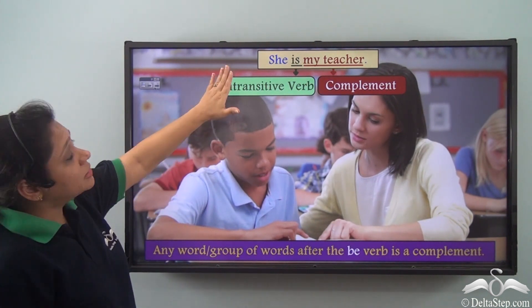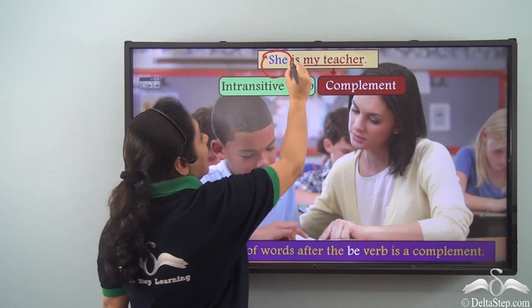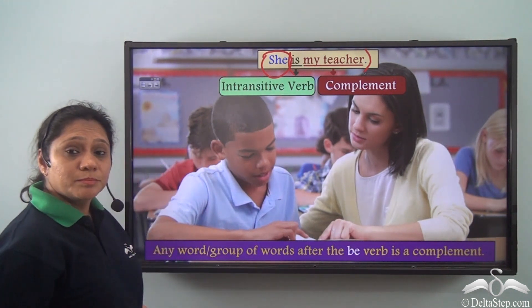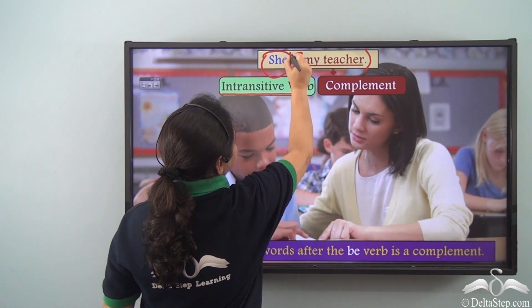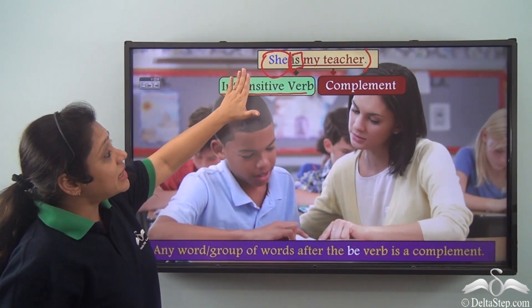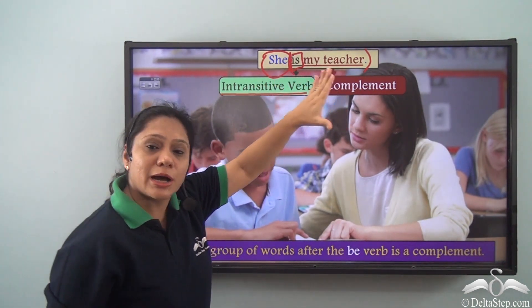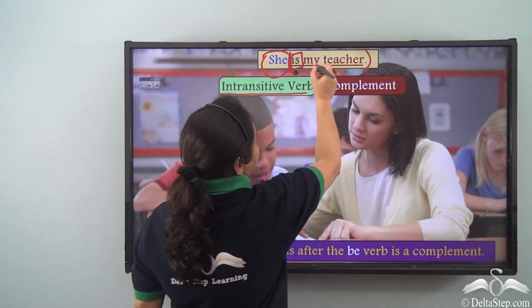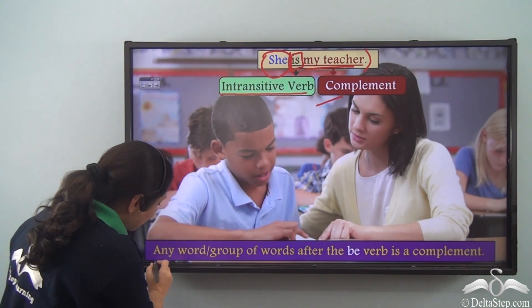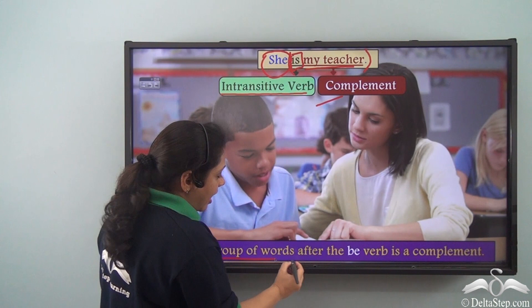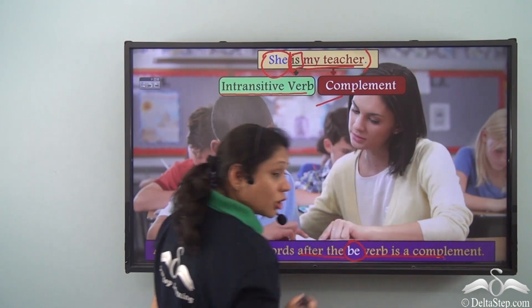If I say 'she is my teacher,' in this sentence 'she' is the subject and 'is my teacher' is the predicate. This predicate has an intransitive verb 'is,' and if I just say 'she is,' the predicate is not complete. So 'my teacher' completes the predicate — 'my teacher' is the complement here. Remember that any word or group of words after the be verb is a complement.